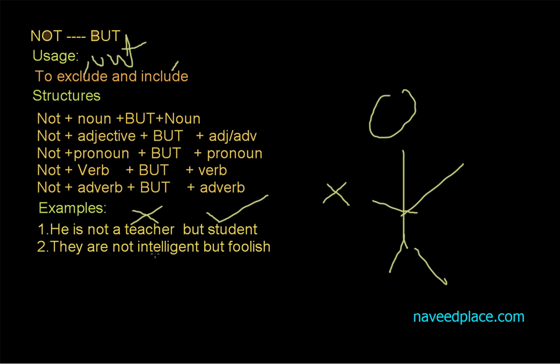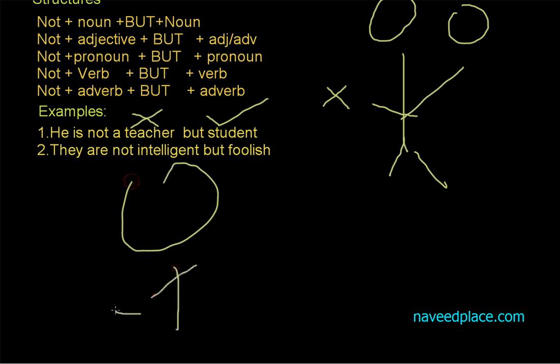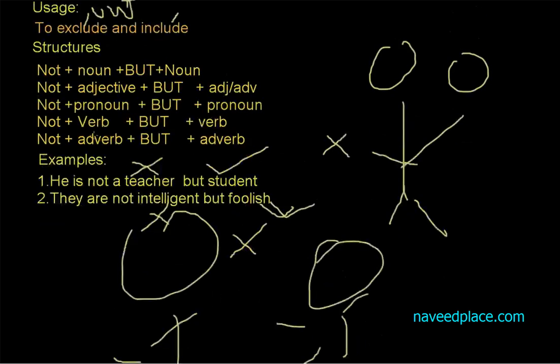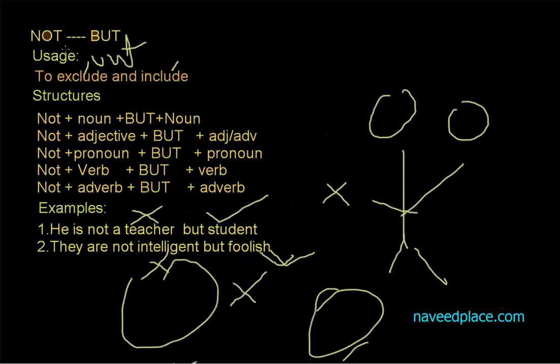Second example is: they are not intelligent but foolish. For example, someone might think they are intelligent. So we say they are not intelligent, but yes, they are foolish. So exclude and include something. This is the usage of NOT and BUT.